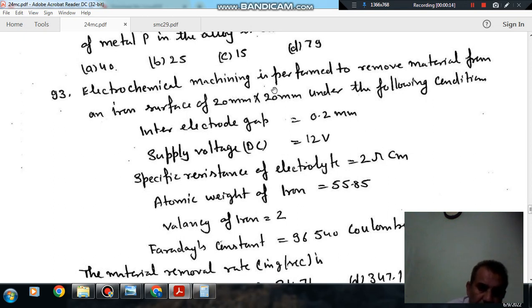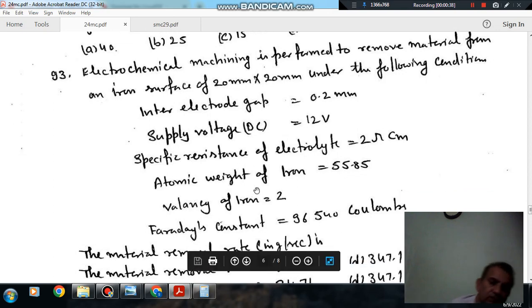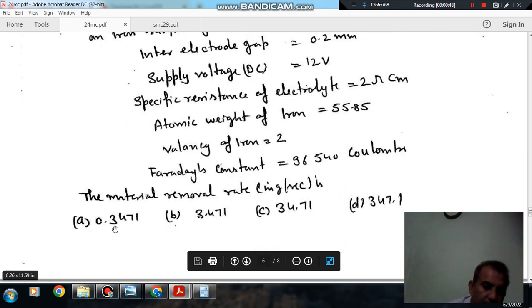Question number 93 is: electrochemical machining is performed to remove material from an iron surface of 20 mm into 20 mm under the following conditions. Inter electrode gap is equal to 0.2 mm, supply voltage DC is equal to 12 volt, specific resistance of electrolyte is equal to 2 ohm cm, atomic weight of iron 55.85, valency of iron is 2, Faraday's constant 96540 Coulomb. Material removal rate in gram per second is: option A 0.3471, option B 3.471, option C 34.71, option D 347.1.